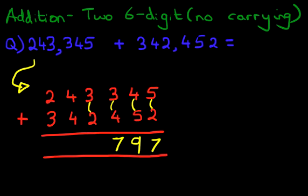The thousands column is 3 plus 2 is 5. The tens thousands column is 4 plus 4 is 4. That's right, it is 8.